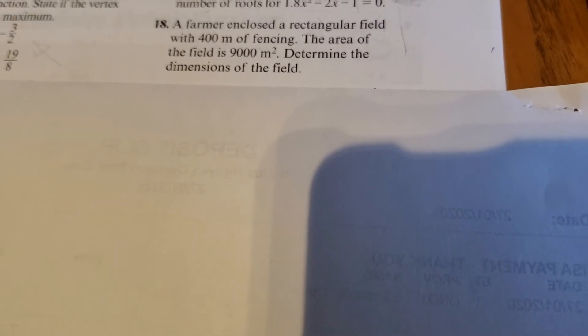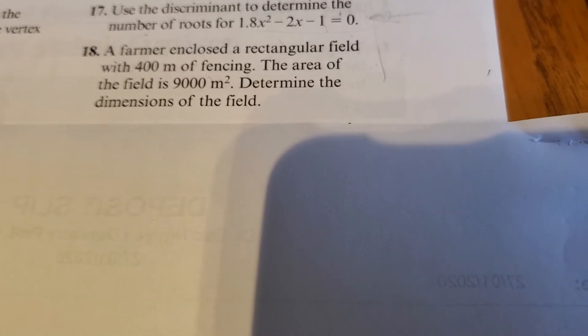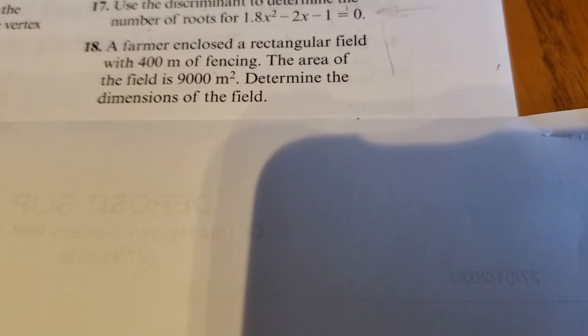A farmer enclosed a rectangular field with 400 meters of fencing. The area of the field is 9,000 meters squared, so determine the dimensions of the field.